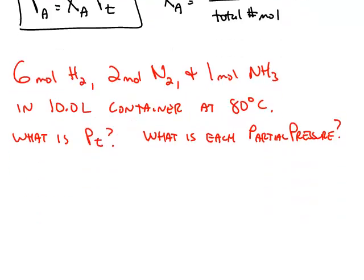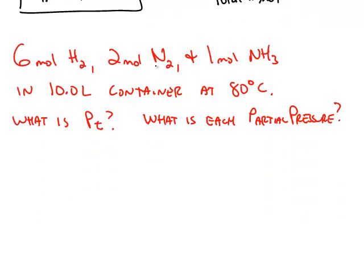So here's a problem where we mix together 6 moles of hydrogen, 2 moles of nitrogen, and 1 mole of ammonia. The total volume of the container is 10 liters, and the temperature is 80 degrees Celsius. First we want to figure out what the total pressure is, and then each gas's partial pressure.